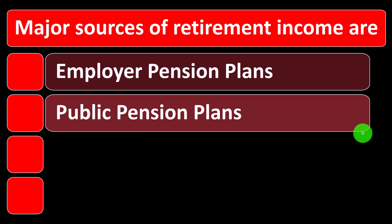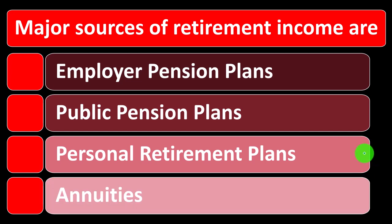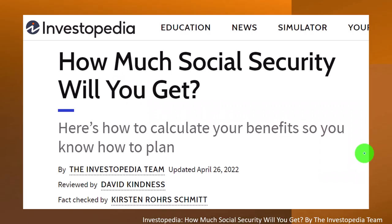If we get social security, great, but the laws could always change, especially if we're further out from when we're actually going to be receiving the benefits. We also have personal retirement plans — things like an IRA, or saving outside of the government plans that we're going to have control over. And we might have annuities, which is a specific investment tool we might use for retirement.